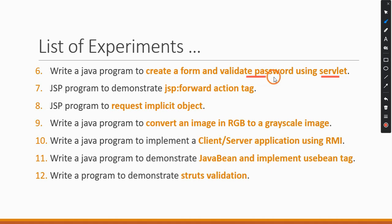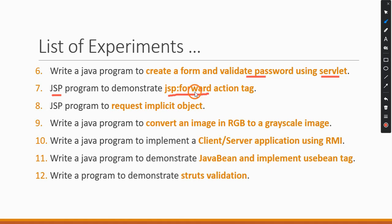The sixth program is again using Servlets — they want us to validate a username and password. You will be creating a login form with a username and password field, and using Servlets we are going to validate those details. In the seventh program, they are asking to use JSP and demonstrate the action tag jsp:forward, which is used to move from one page to another.